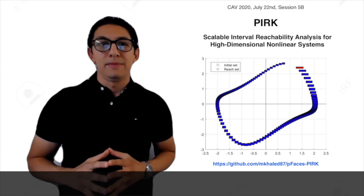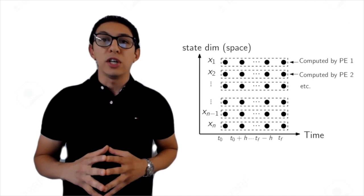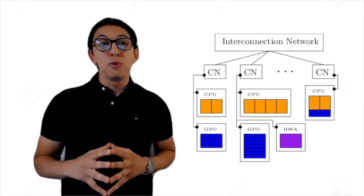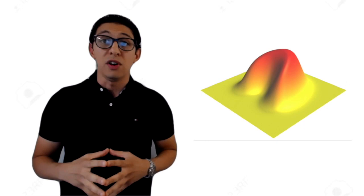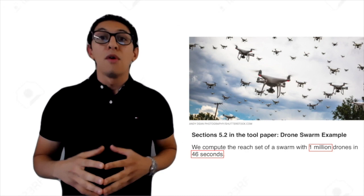The computation load is mostly ODE integration, so we parallelized the computation by parallelizing ODE integration using the p-phase acceleration system. This lets PERC run on heterogeneous compute platforms like clusters of GPUs and CPUs. We present case studies from applications where high-dimensional systems arise naturally, such as discretized nonlinear PDEs and swarms of agents with nonlinear dynamics. For sparse systems, PERC can compute reachable sets for billion-dimensional systems in less than an hour.